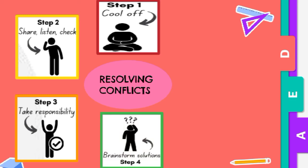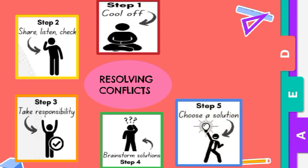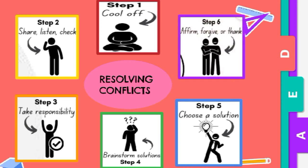Step 4: Brainstorm solutions. Think of solutions that are acceptable for both or all parties. Step 5: Choose the solution together — the one you think will be most effective. And lastly, Step 6: Affirm, forgive, or thank.